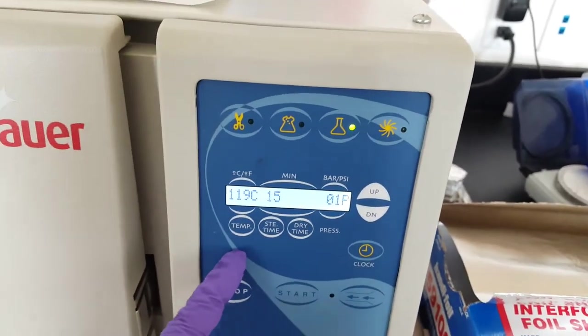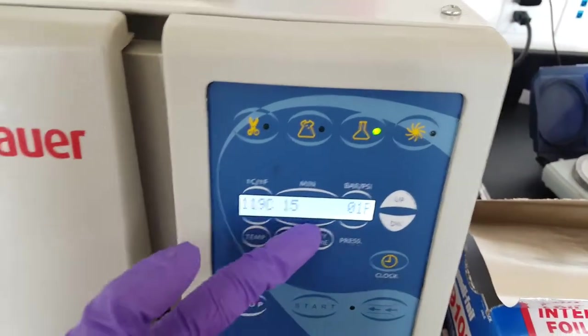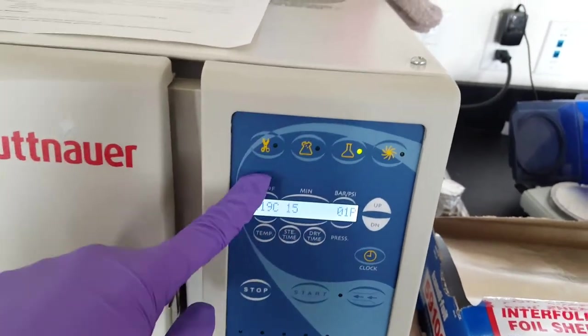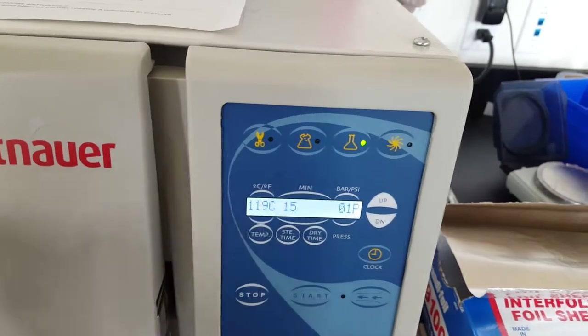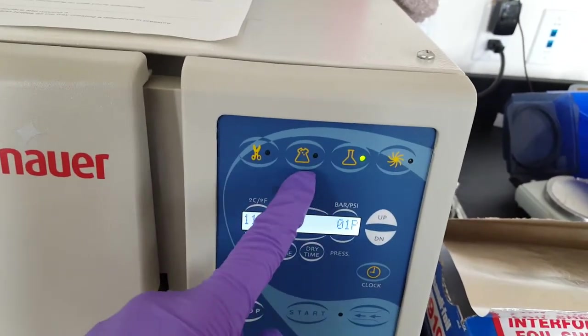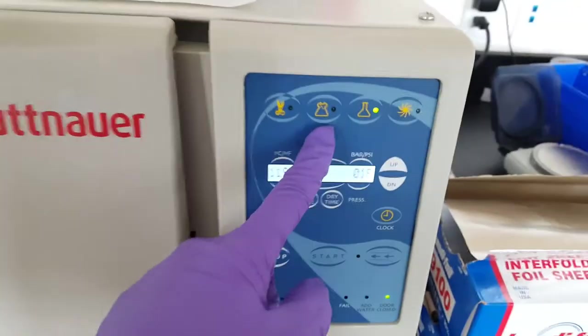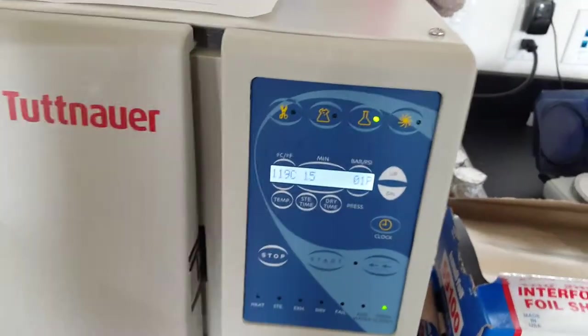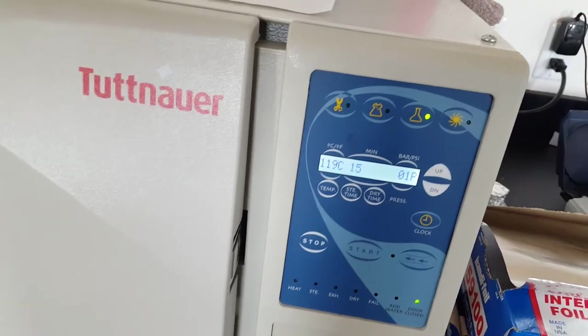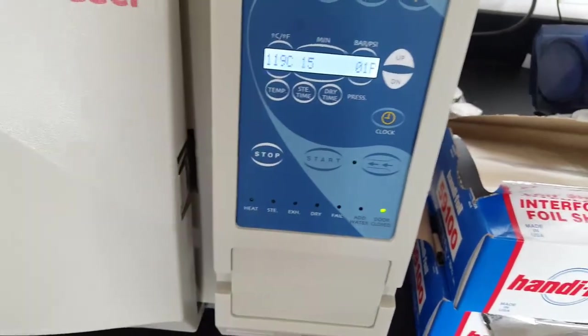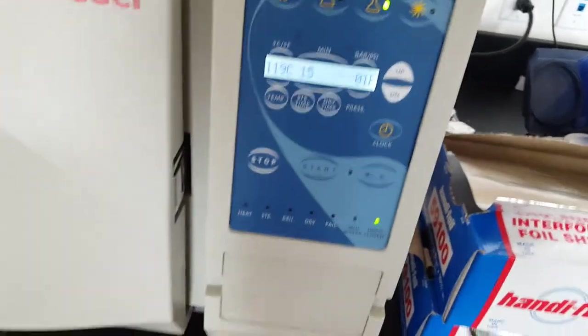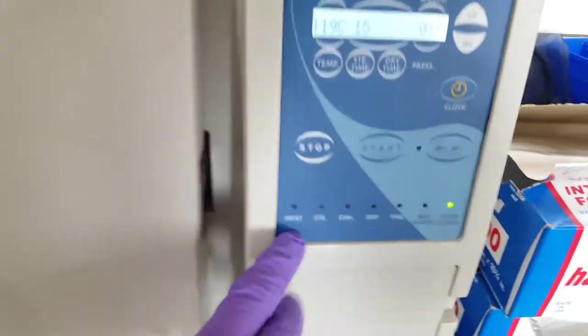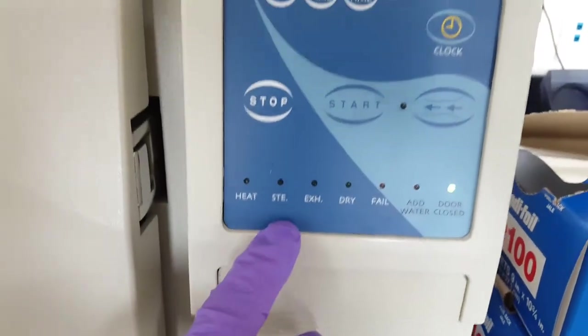But if you just go up to the autoclave and you plan to use it, I wouldn't change any of these settings. Don't press any of these buttons. This is the unwrapped, if you're putting unwrapped things in there, this is for if you're putting wrapped things in there. I'm not entirely sure why that's important. You can go to the manual if you want to know more about that. And this is the clock, setting time. And essentially these lights will go on based on what stage the autoclave is in.